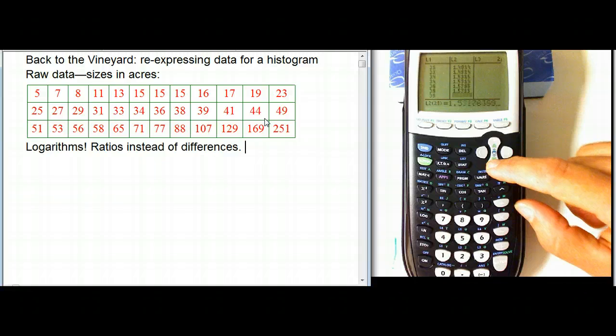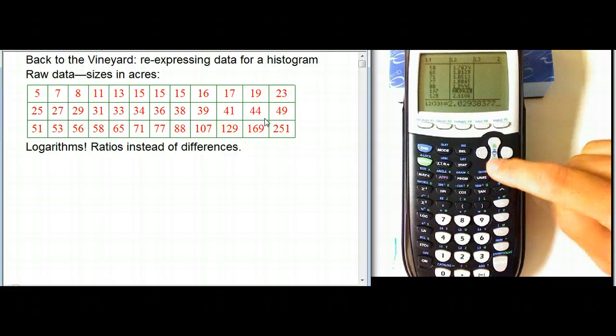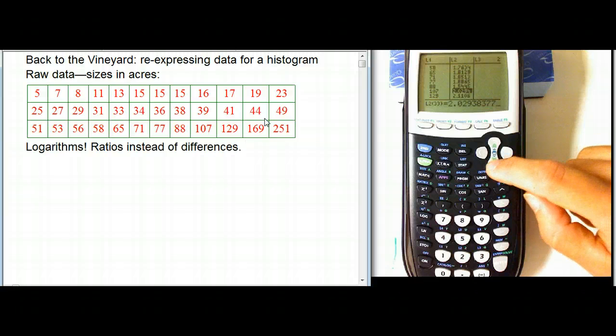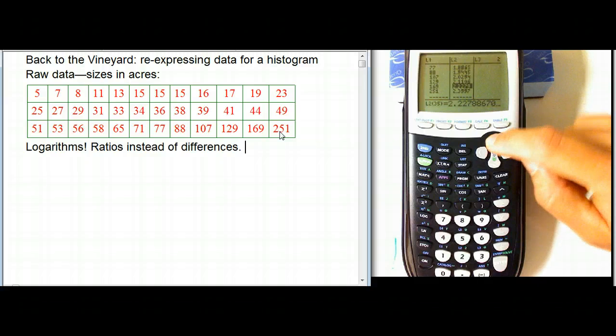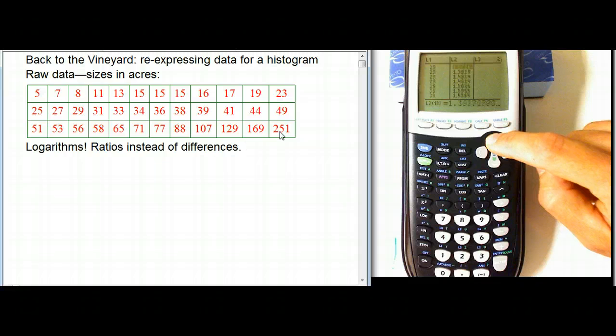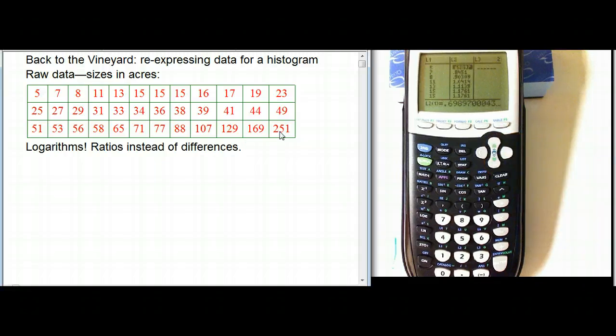And if we go way down to the big entries, 107, that needs 3 digits, so you take 1 away, and that's going to be 2 point something for the log. And the biggest one is 2.4, just about, for the 251, the big vineyard there. So it's between 2.4 and then down to 0.6 or something was the smallest one, where it was 5, yeah, 0.7.